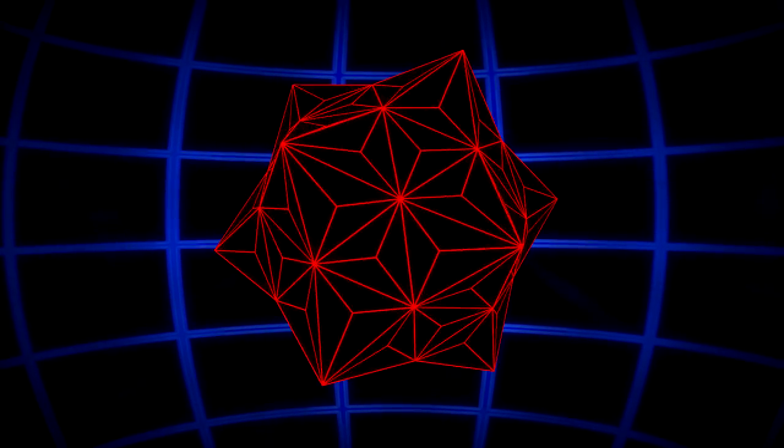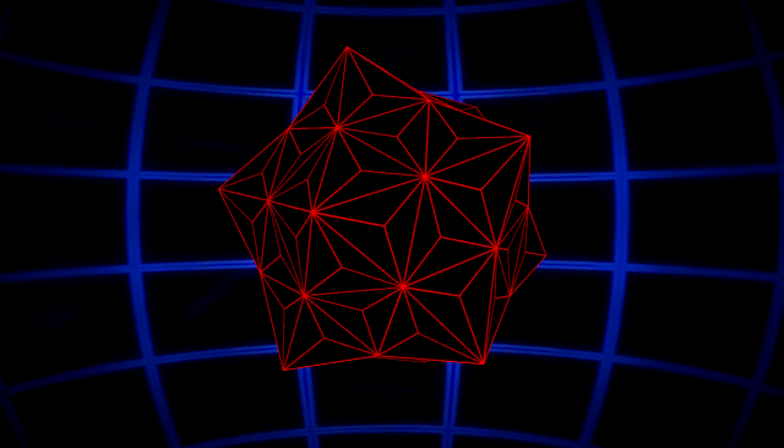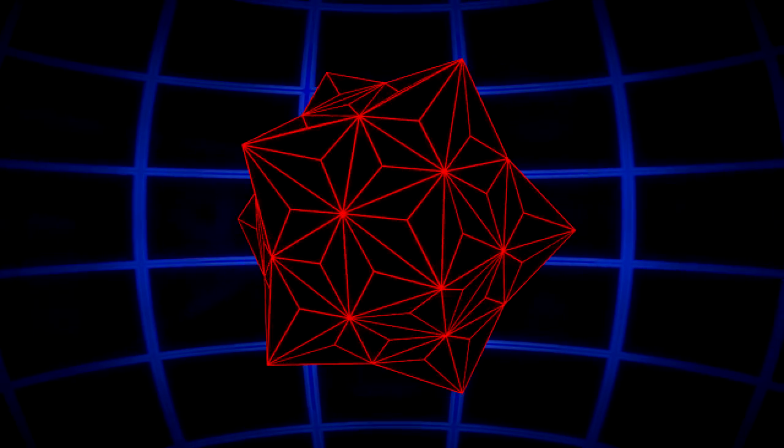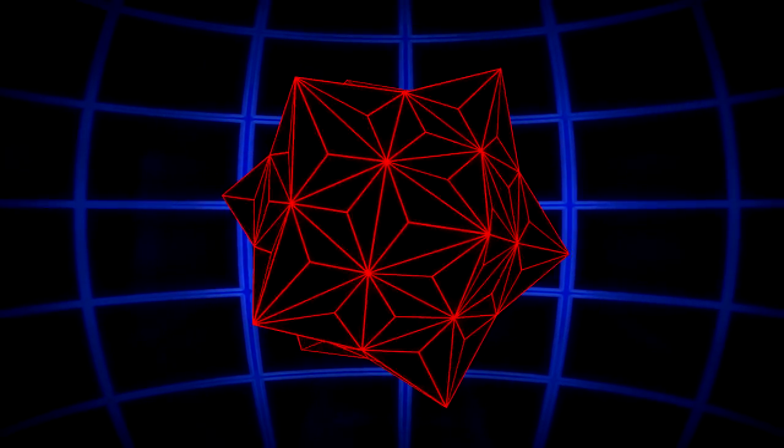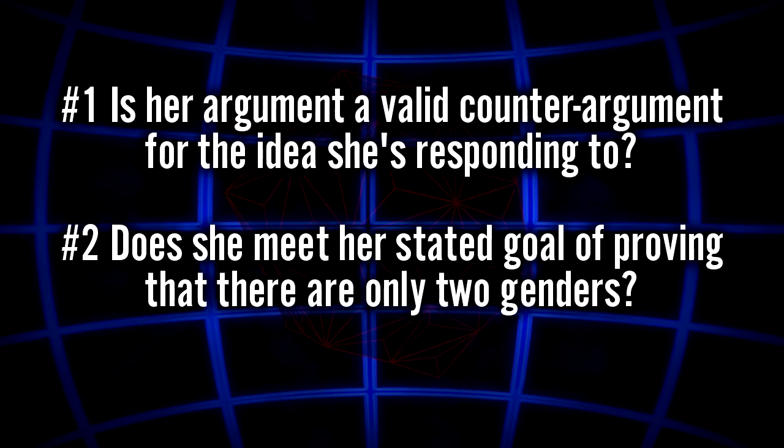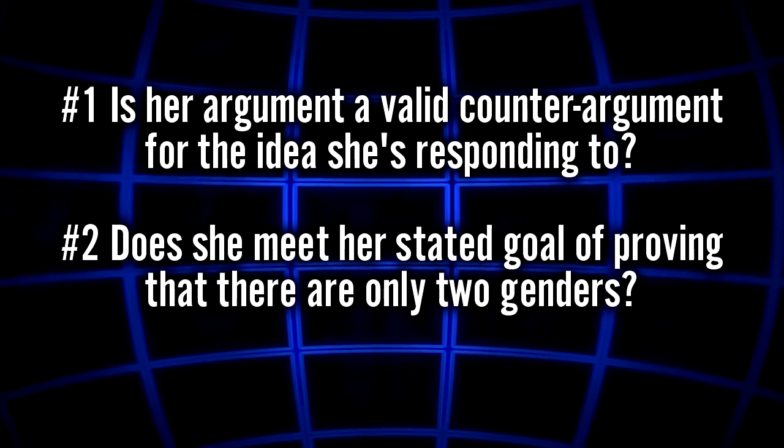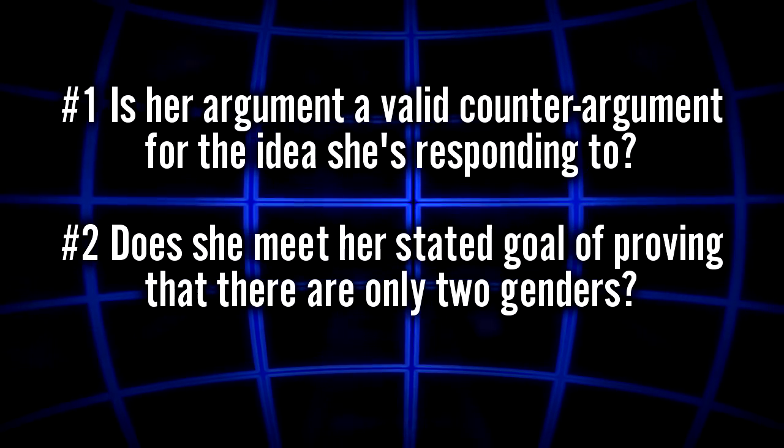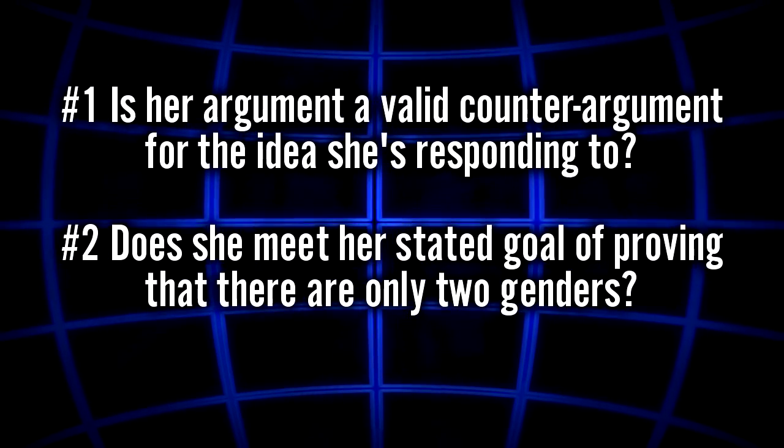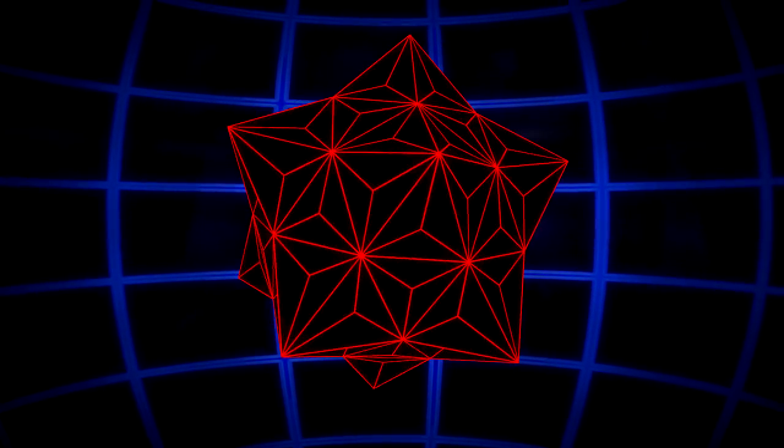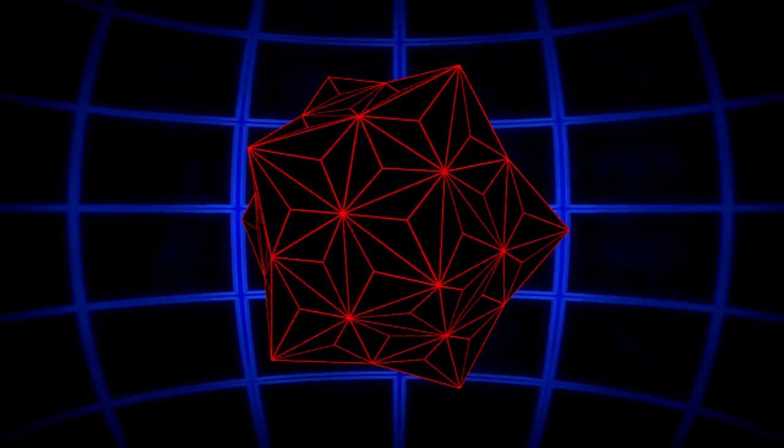Remember that this is the stated goal of this video. Roaming is intent on deconstructing common arguments for non-binary genders and proving that there are only two genders. This is the premise that Roaming has set for herself and this is the criteria that I'll be using to judge the effectiveness of her arguments. So this means I'll be looking for two things. Number one, is her argument a valid counter argument for the idea she's responding to? And number two, does she meet her stated goal of proving that there are only two genders? We need to look at this objectively to determine the strength of her arguments and she's given us a goal so we need to see if her video lives up to it.